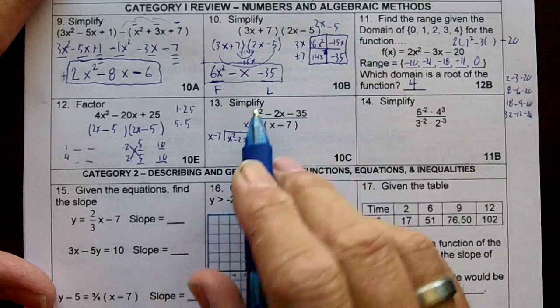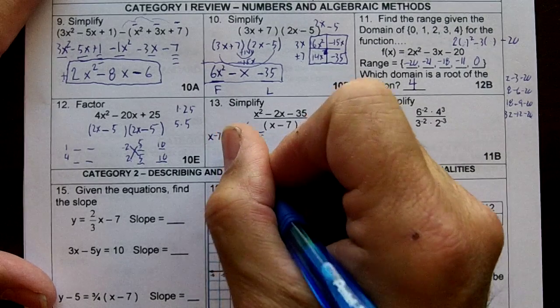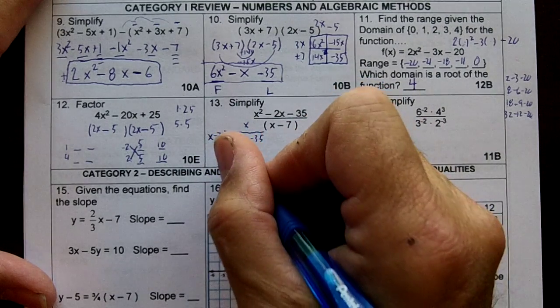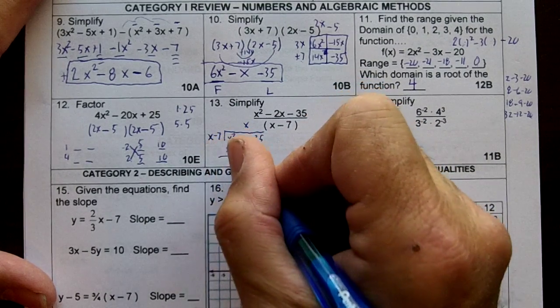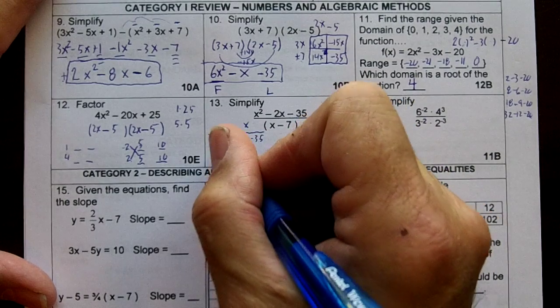So I'm going to put an x right here. x times x is x squared. x times negative 7 is minus 7x. Draw my bar. And then I'm going to subtract these.